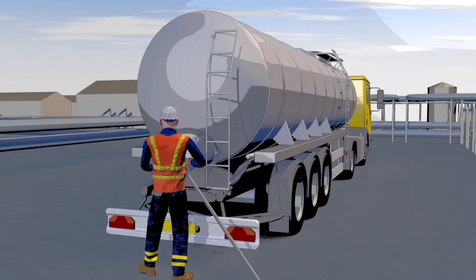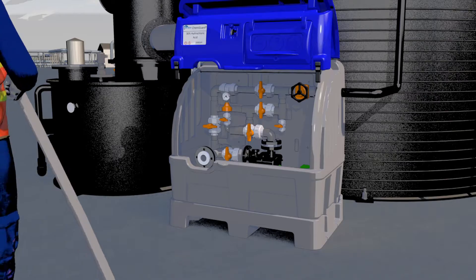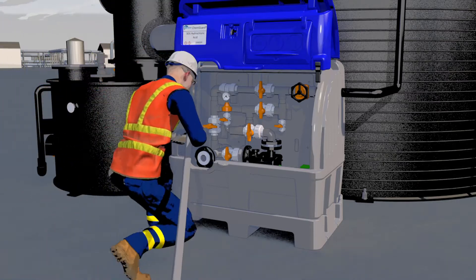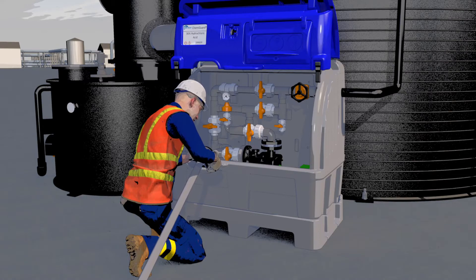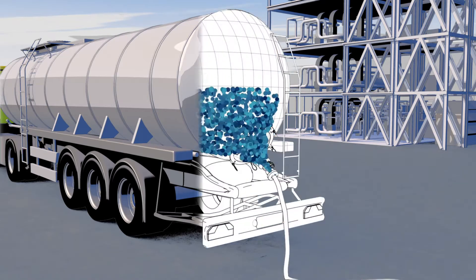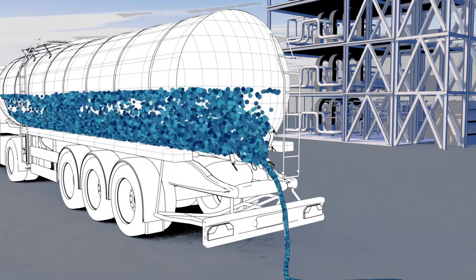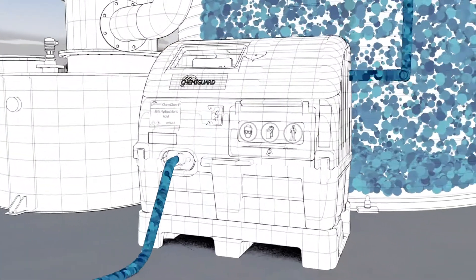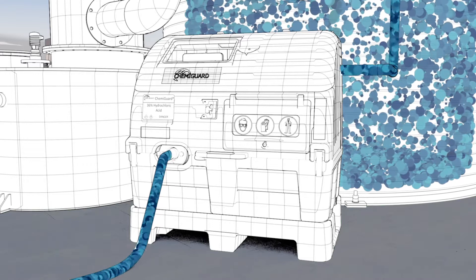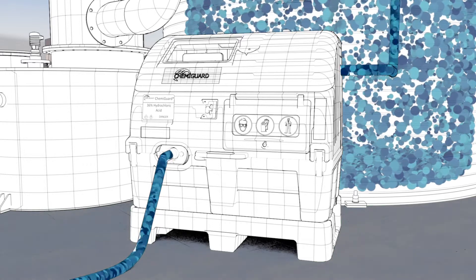As chemicals are delivered, our Chemiguard range provides protection to both the environment and the operative. Loss of containment incidents are avoided as the liquid safely travels from the tanker through the Chemiguard unit and into the storage tank, with the integral bund providing protection against the damage and costs incurred by loss of containment.